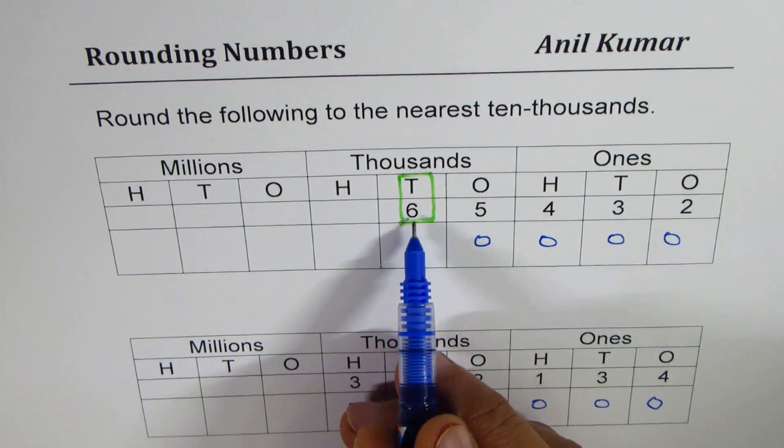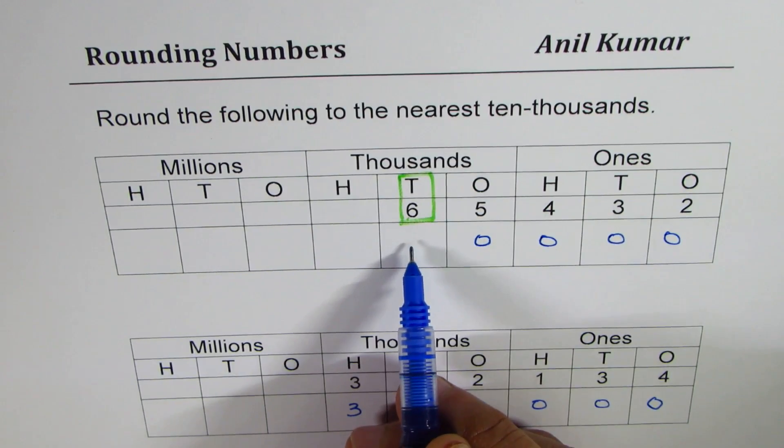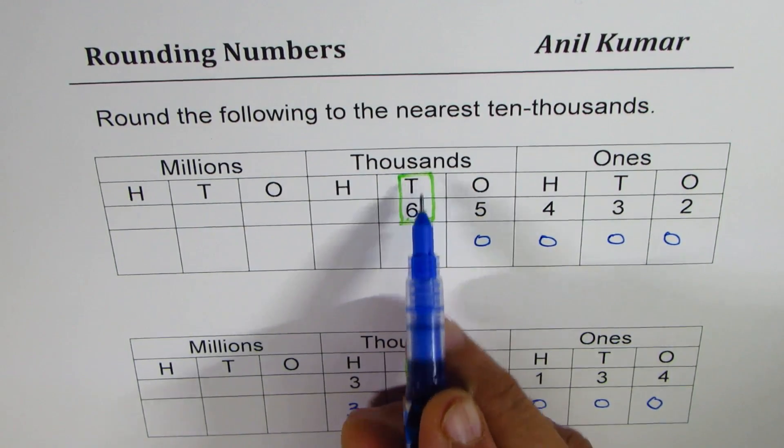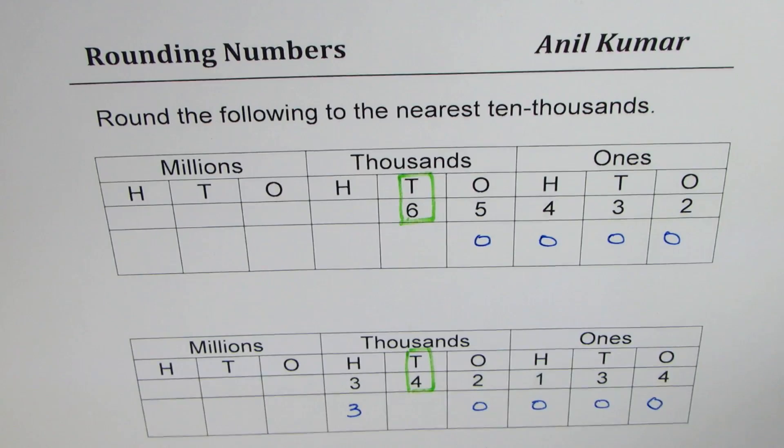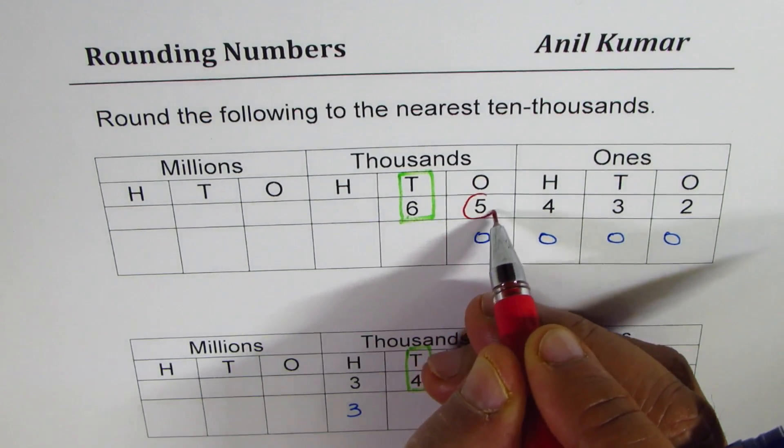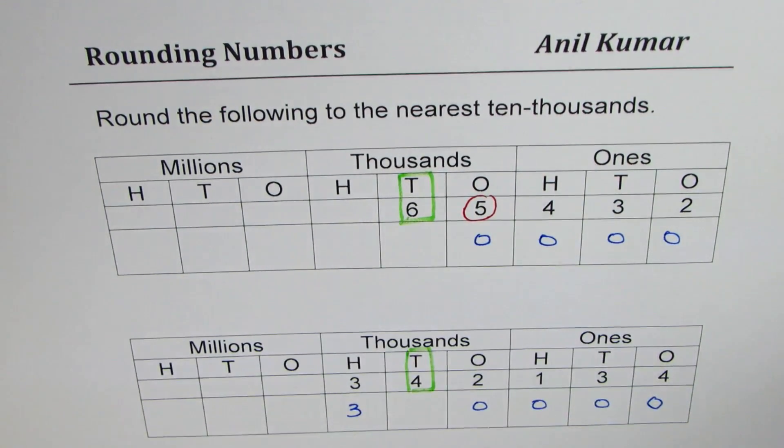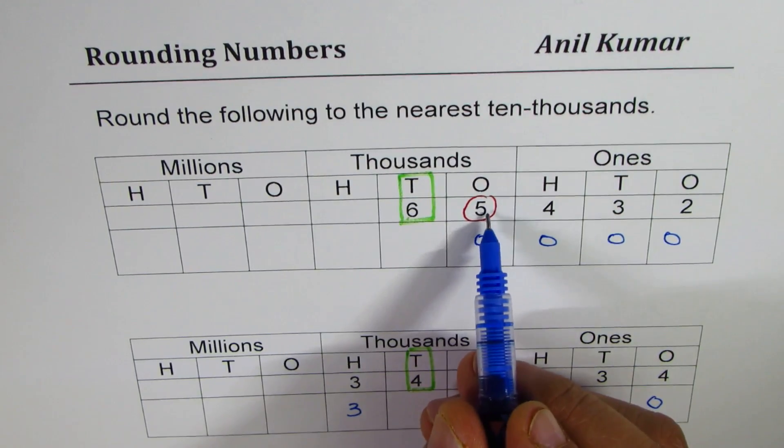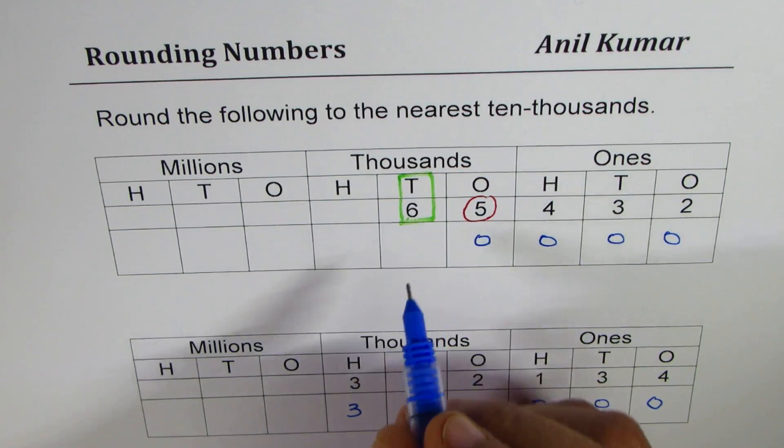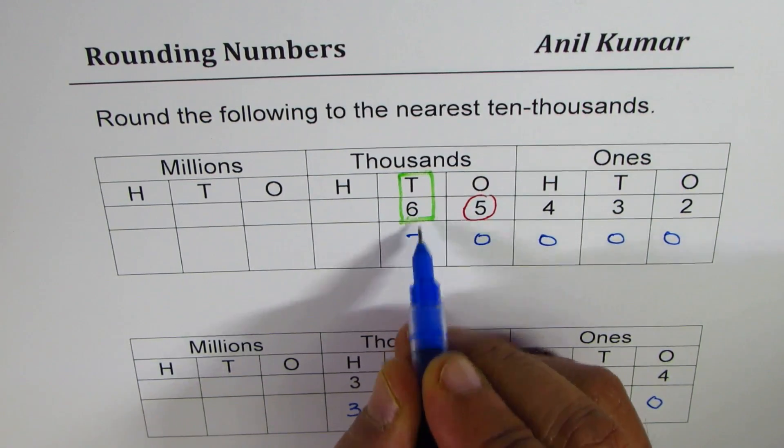Now we have to decide about six. Should it remain same or should it increase? That really depends on the number on the right side of six. It is five. Five or more round higher. So it becomes seven.